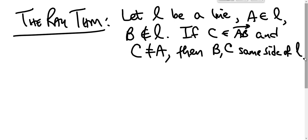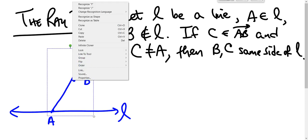This makes a ton of sense if you just take 15 seconds and draw yourself the picture. You draw something like this: A is on the line, B is not on the line, here's ray AB. C is somewhere on this ray and it's not here. B and C are on the same side of L.